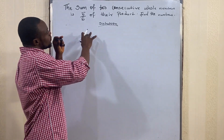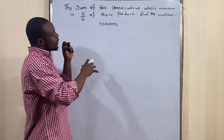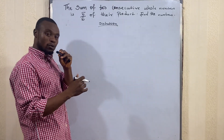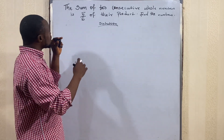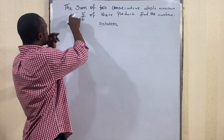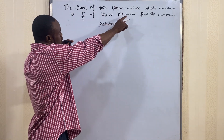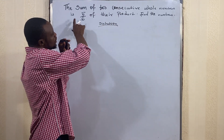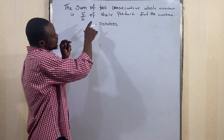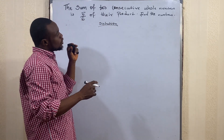This is a word problem question leading to a quadratic equation. The question reads: the sum of two consecutive whole numbers is five over six of their product. Find the numbers.